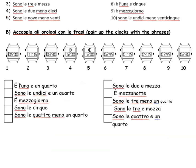Esercizio B: accoppia gli orologi con le frasi — here you had to pair the clocks with the phrases that were underneath. Number one: five o'clock — you're looking for the phrase which is sono le 5, so that would be this one here. Number two: 11:15 — so that would be sono le 11 e un quarto, that is this one here.